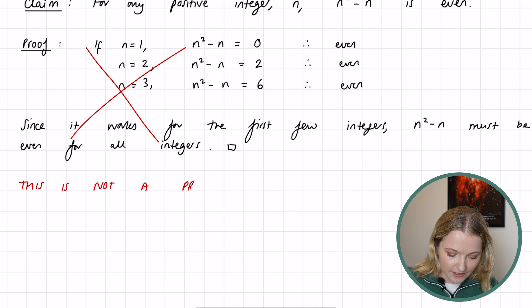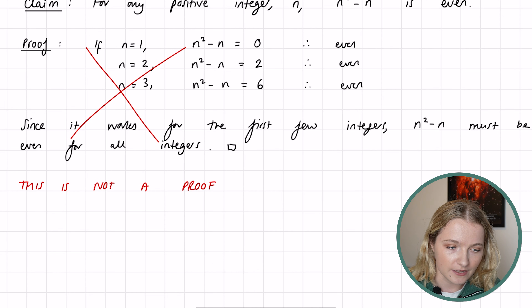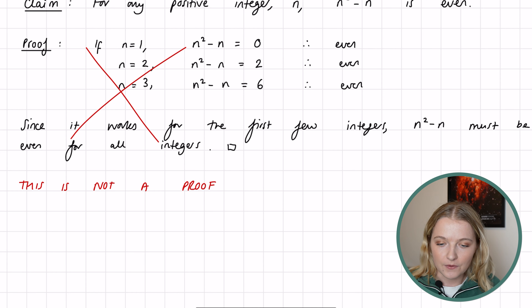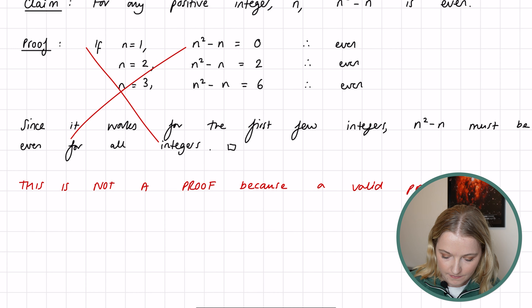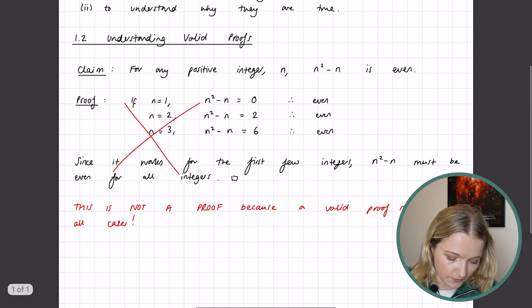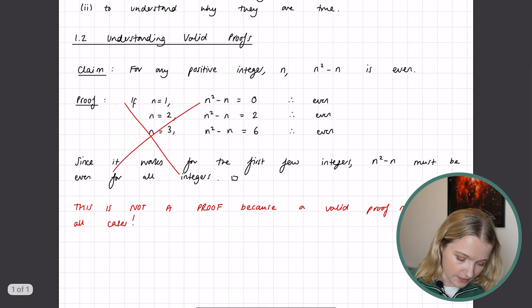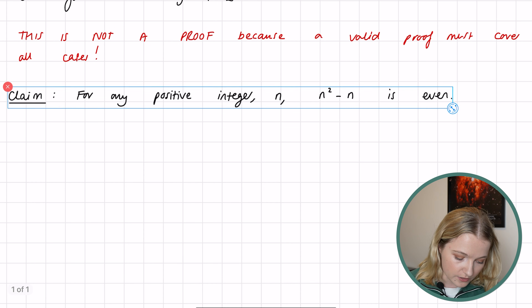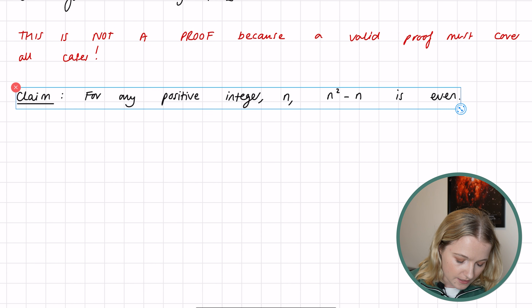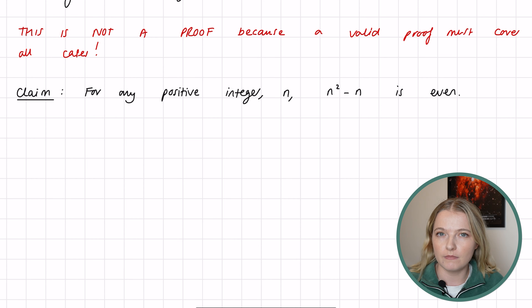This is not a valid proof because a valid proof must cover all cases. We can't just say it's true for three different n values and therefore it's true for all. So what can we actually do here? Well, we can consider all of the possible cases. This is really important with proofs — sometimes you can formulate a proof and it can be very sophisticated and beautiful, but if you haven't actually covered all the cases, the proof itself is incomplete.